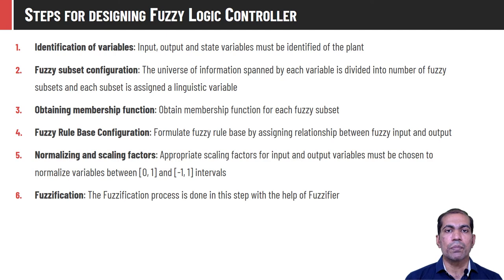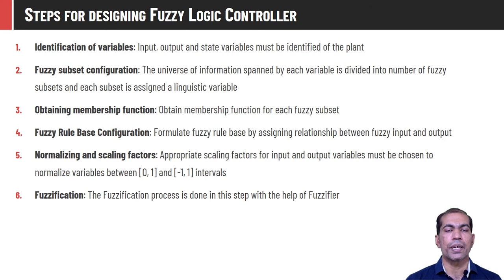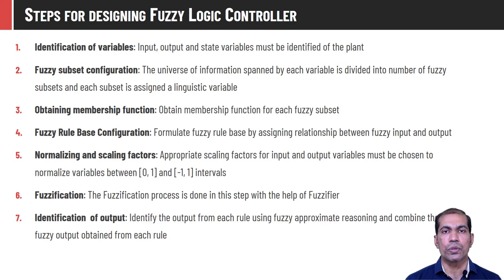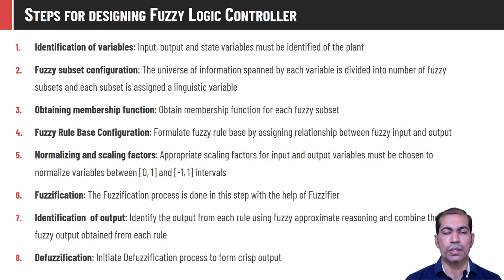After that, whatever crisp input values are given, we have to apply fuzzification to convert them into fuzzy values so the fuzzy inference system can interpret them. The next step is to identify the output — with the help of the fuzzy rule base, the fuzzy inference system reads the fuzzy input, applies some process, and generates a fuzzy output. The last step is the defuzzification process, where the fuzzy output is converted into a crisp value so the controller can take appropriate actions.